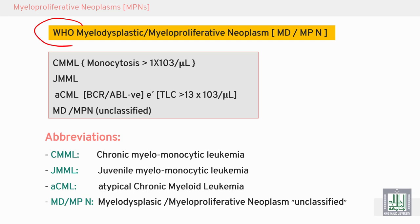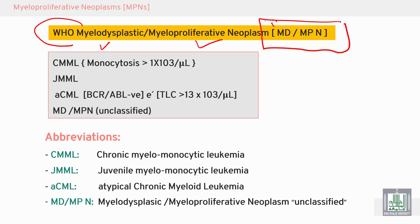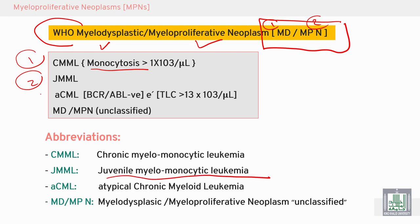WHO made a classification for myelodysplastic and myeloproliferative neoplasms, combining both together in MDS-MPN. This was subclassified into chronic myelomonocytic leukemia with monocytosis more than 1000, juvenile myelomonocytic leukemia, and atypical chronic myeloid leukemia.